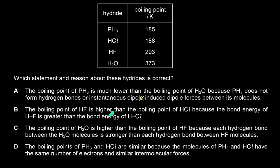Statement B says the boiling point of HF is higher than HCl because the bond energy of HF is greater. Bond energy does not determine boiling points for simple molecules — it's intermolecular forces, not bond energies, that determine boiling and melting points. Bond energy relates to reactivity and how easily the bond breaks.